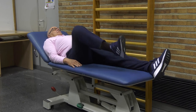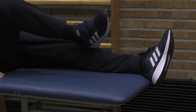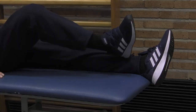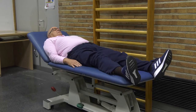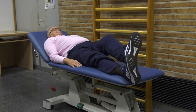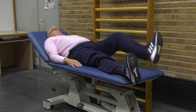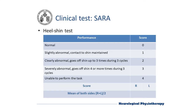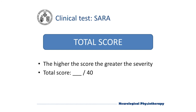The patient lies on the examination bed without sight of the legs. The patient is asked to lift one leg, point with the heel to the opposite knee, slide down along the shin to the ankle, and lay the leg back on the examination bed. We pay attention to whether the patient slides down without maintaining contact with the shin.